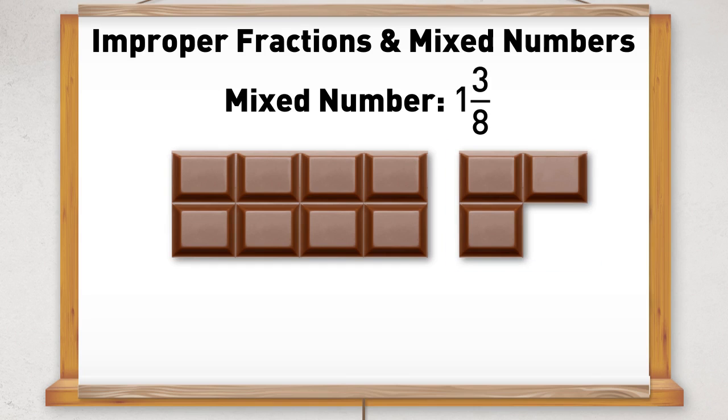If we count up the number of pieces we have 11 eighths. We can also write the number of chocolate bars as 11 eighths.